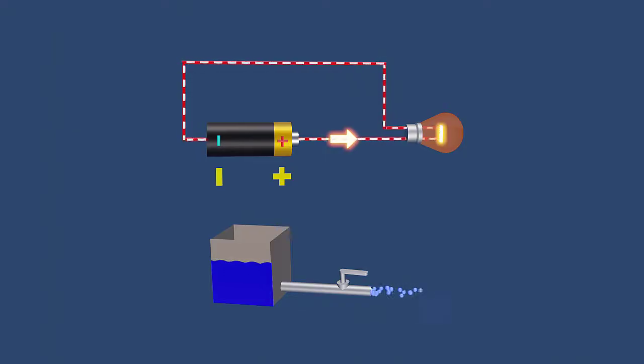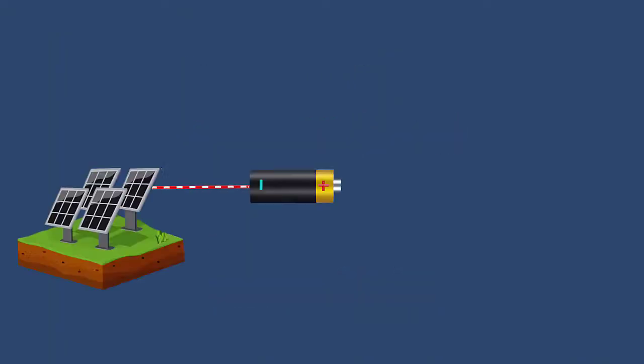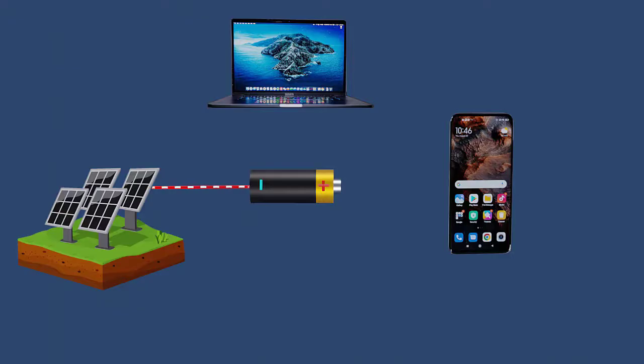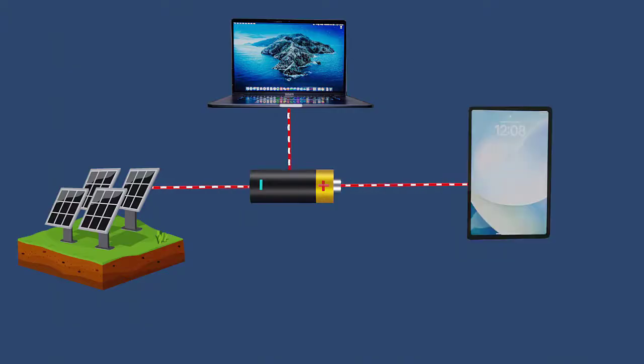This is similar to water flowing in one constant direction, maintaining its pressure and flow rate. This stability makes DC ideal for storing in batteries, similar to how tanks store water. This storage ability makes DC essential for powering portable devices like smartphones, laptops, and tablets.